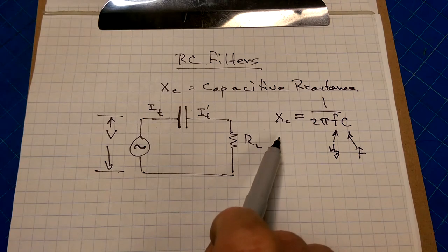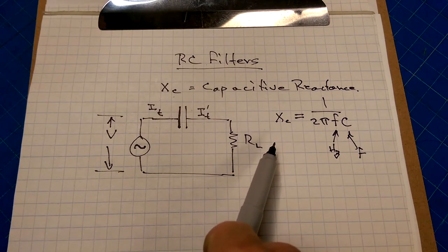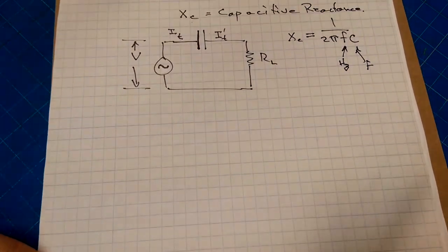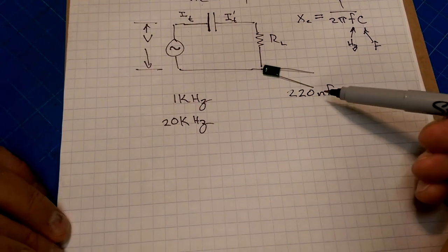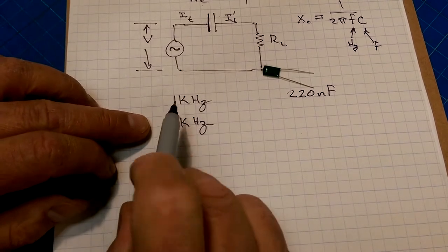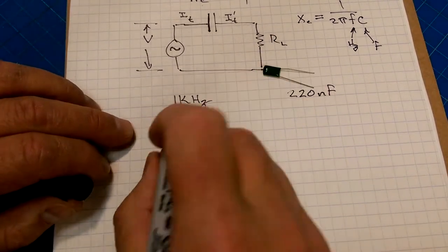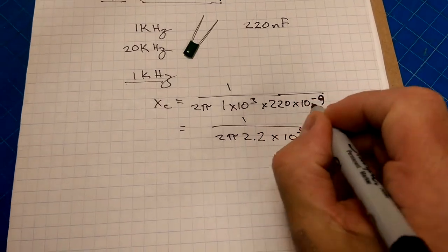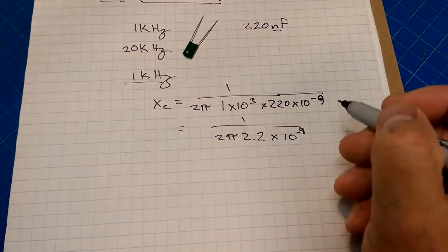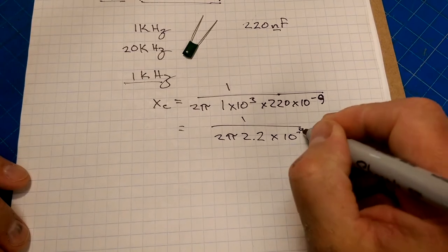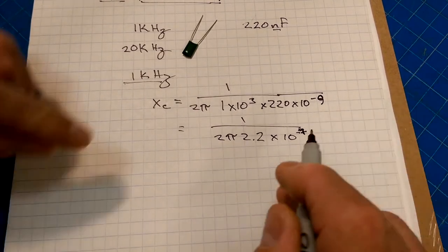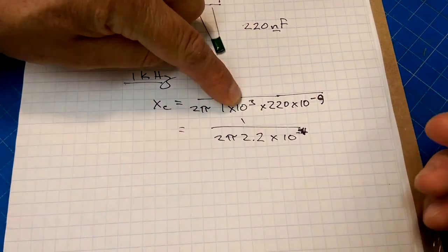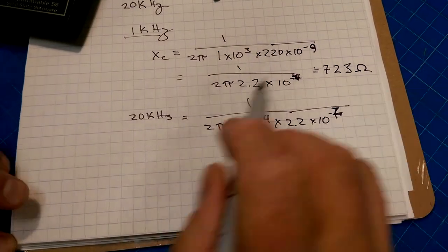Let's take a look at what the capacitive reactance is for a couple of frequencies, and we'll do some calculations. So we're going to take a look at a 220 nanofarad capacitor, and we're going to take a look at its reactive capacitance at 1 kHz and 20 kHz. 220 times 10 to the negative 9 nanofarads, so 2.2 times 10 to the negative 7, but then I'm taking another 3, 10 to the negative 4.